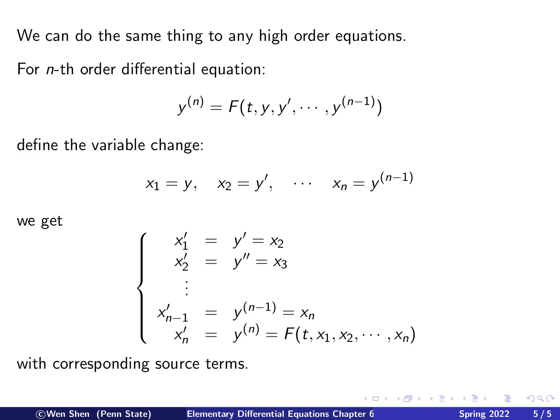And then there's the last equation, xn prime, which will be y to the nth derivative. Differentiate this one more time. And that we use the original equation, which will be a function of t and the y and the y prime, all these lower y's. And then we see that thanks to this definition here, we can write this as function of x1, x2. Because y is just x1, y prime is x2, and the y to the n minus 1 derivative is just xn.